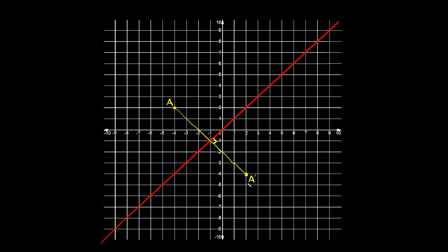Another way to count the spaces is to start at your original point and go in a straight line — either sideways or down — until you hit the line of reflection. Going sideways, we count one, two, three, four, five, six spaces to the line. Then from there, we go down six spaces — one, two, three, four, five, six — and we land at A prime again.